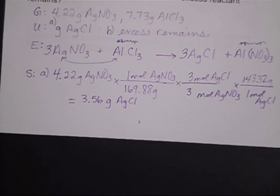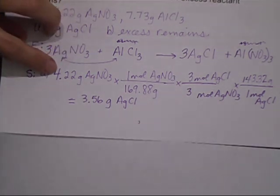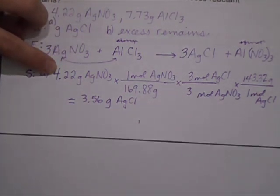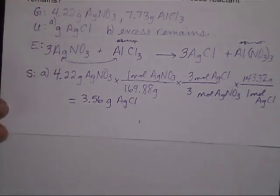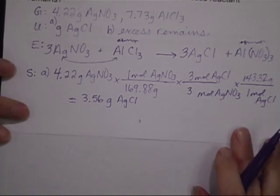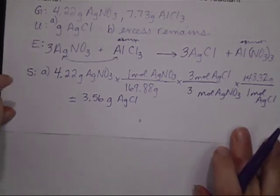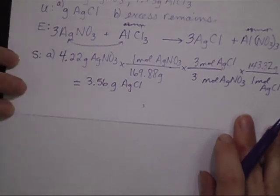So again, what that means is that if I started off with 4.22 grams of silver nitrate and I assume that I have plenty of my other reactant, I can make 3.56 grams of AgCl. But I have another reactant so I have to test it as well.